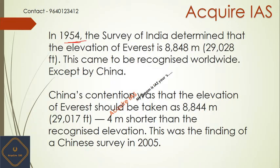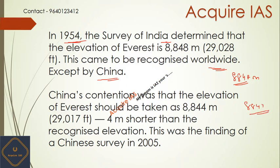In 1954, India determined the elevation of Mount Everest as 8848 meters, which was recognized worldwide, except by China. China's contention was that the height was 8844 meters — four meters shorter than the recognized elevation. This 8844 meter measurement was given by a Chinese surveyor in 2005.